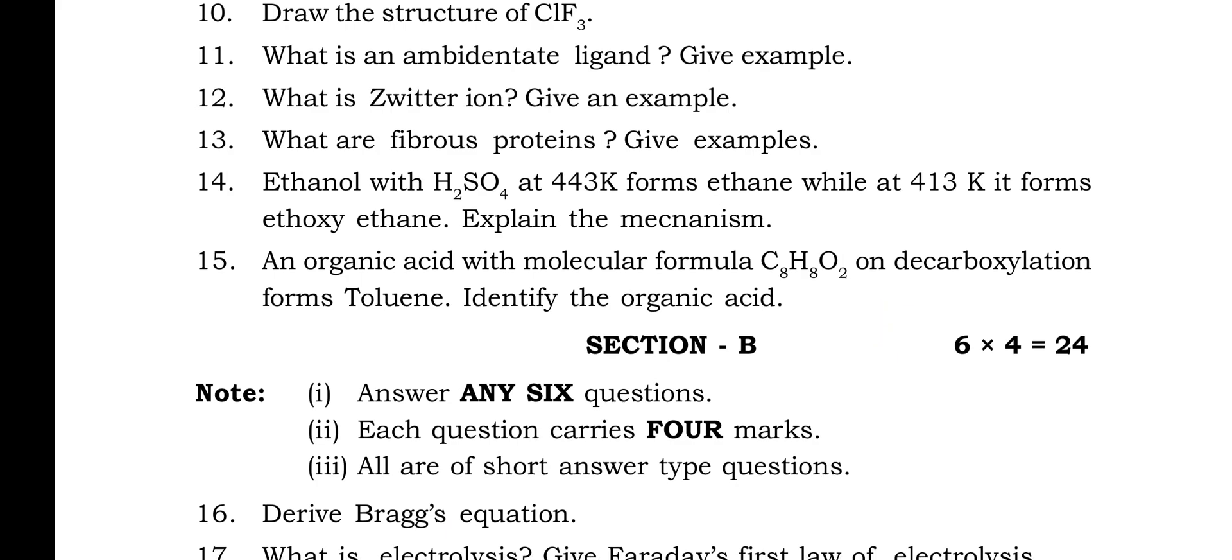Question 14: Ethanol with H2SO4 at 443K forms ethene while at 413K it forms diethyl ether. Explain the mechanism. And the last question in Section A is Question 15: An organic acid with molecular formula C8H8O2 on decarboxylation forms toluene. Identify the organic acid.